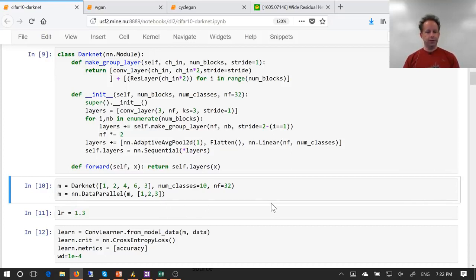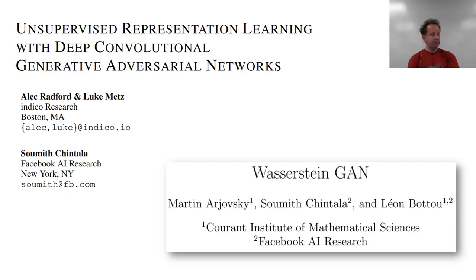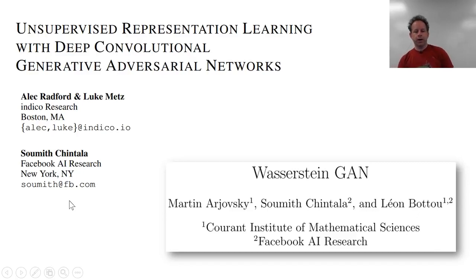So let's take a slightly early break and come back to do all our GANs in one go. Okay, so we're going to talk about Generative Adversarial Networks, also known as GANs, and specifically we're going to focus on the Wasserstein GAN paper, which included some guy called Soumith Chintala, who went on to create something called PyTorch. The Wasserstein GAN was heavily influenced by the DCGAN — Deep Convolutional Generative Adversarial Networks — paper, which Soumith was also involved with.